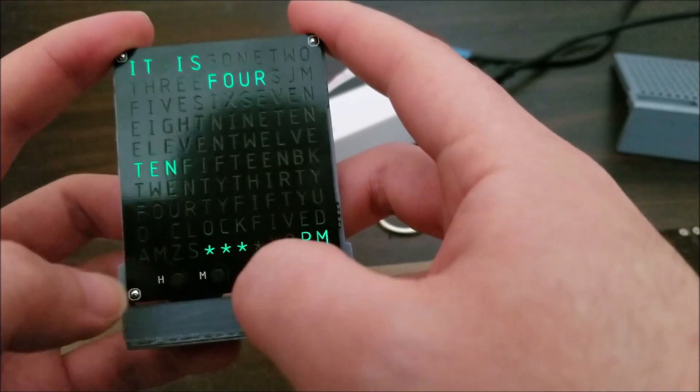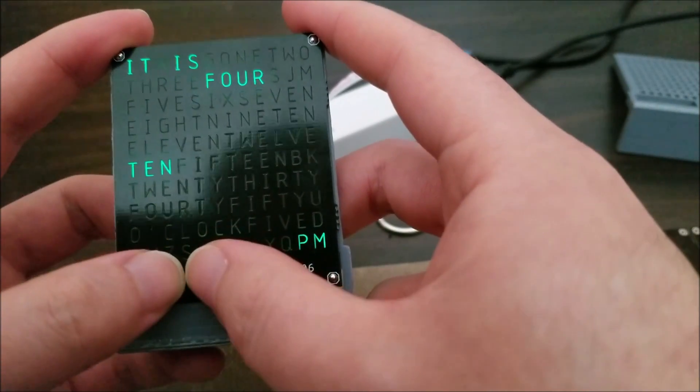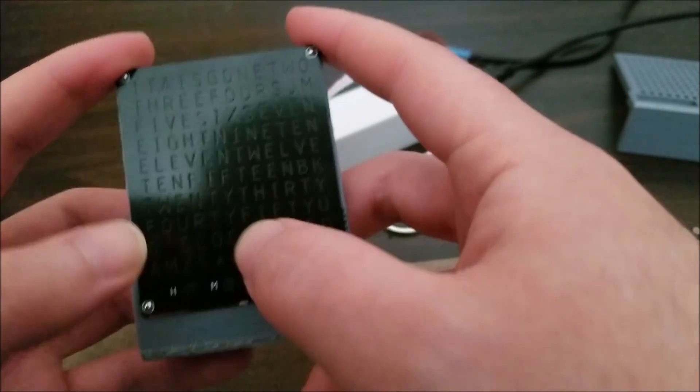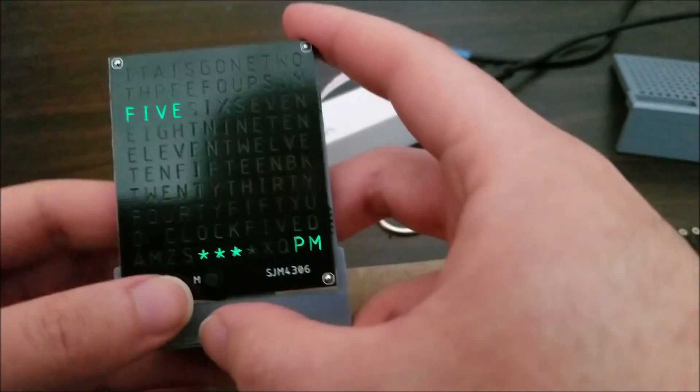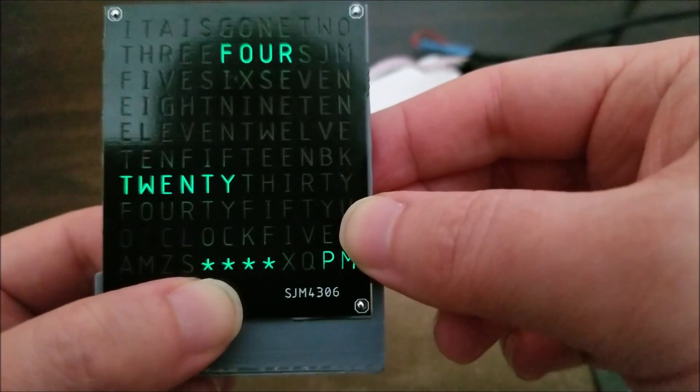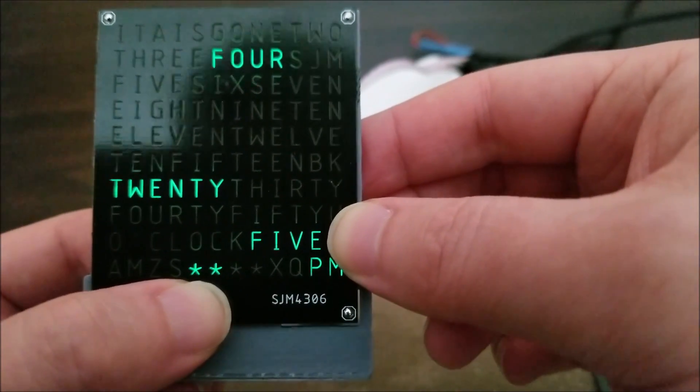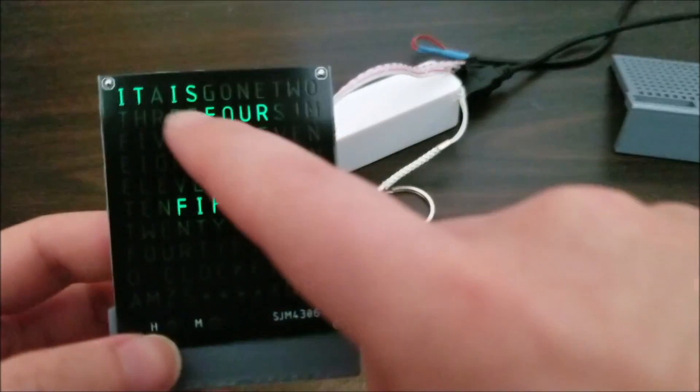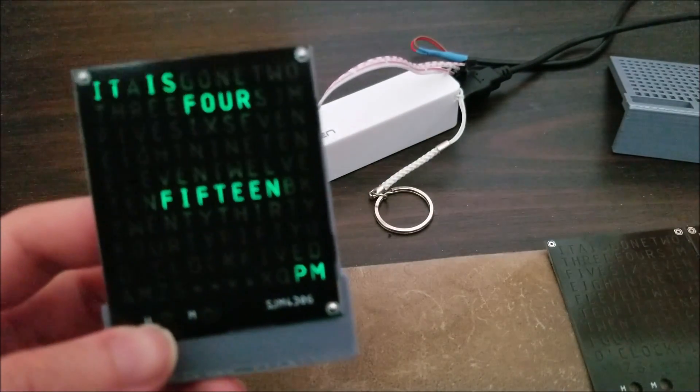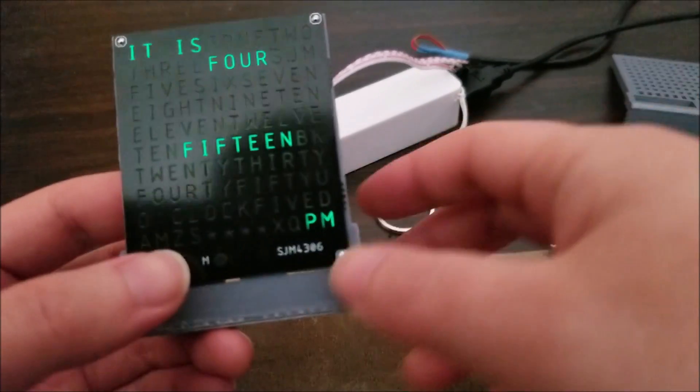To set the time, you have to press in both hours and minutes and it will actually remove the 'it is'. So let me just go through and there's 4:14. And there we go. So it is 4:15 now PM.